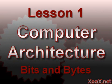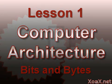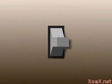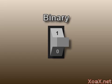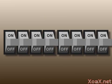Lesson one: bits and bytes. All memory inside of a computer is made up of switches, just like a light switch. These switches can be either on or off. Numerically, we represent these states by one or zero respectively. Since these switches have two states, they are said to be binary.